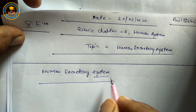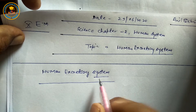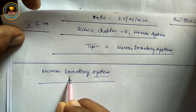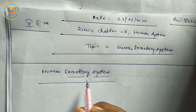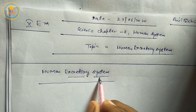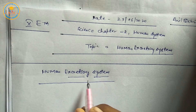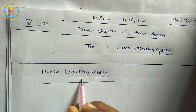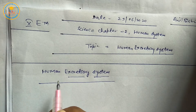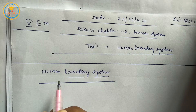Students, 'system' means a group of organs. These organs are related to excretion. So, a group of organs related to excretion in humans is called the Human Excretory System.